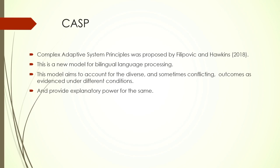Keeping this context in mind, the Complex Adaptive System Principle, or CASP in short, was proposed by Pilipovich and Hawkins in 2018. This was built upon their previous model by the same name proposed in 2013. This updated version tries to make sense of bilingual linguistic behavior by providing an overarching set of principles. So, what are those principles?